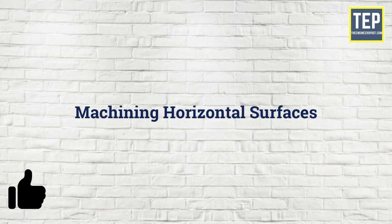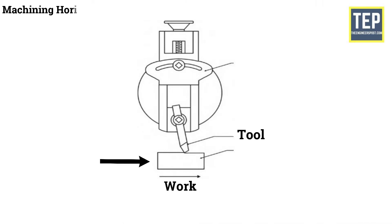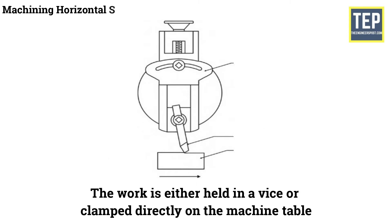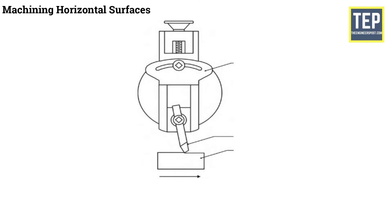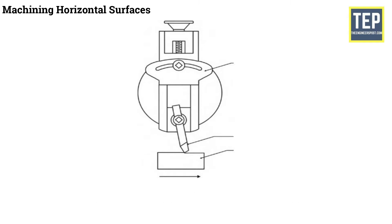Machining horizontal surfaces is the most common shaper machine operation. The work is fed in a horizontal direction under the reciprocating tool and the surface produced is horizontal and flat. The work is held in a vice or clamped directly on the machine table depending upon its size. The tool is set at a proper inclination and at the correct height above the work, the depth of cut adjusted, and the machine started.